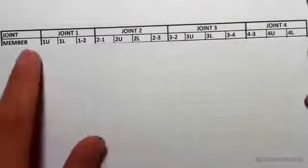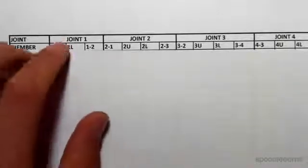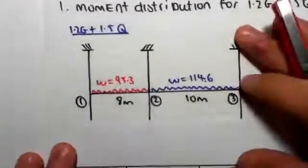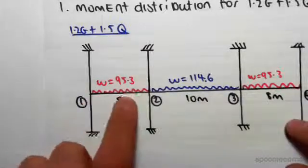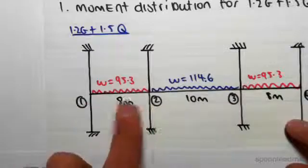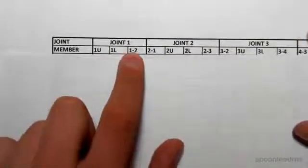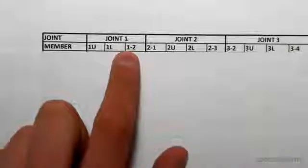Line number two is the member. Now at each joint we're going to have a different number of members. So for example, at joint one we have the column upper, the column lower, and the beam going from one to two. I denote that one upper, one lower, and the beam going from one to two.